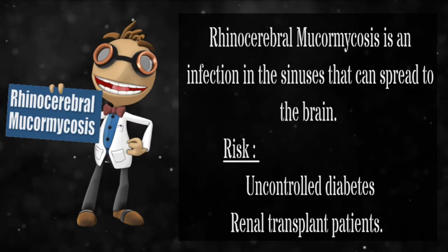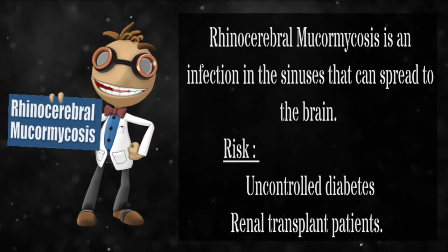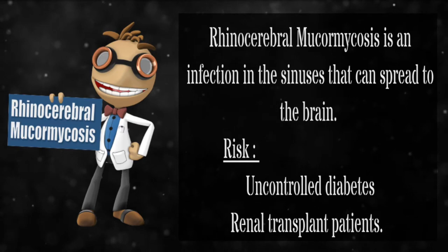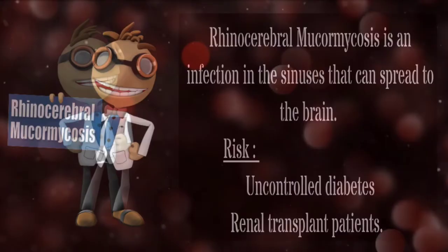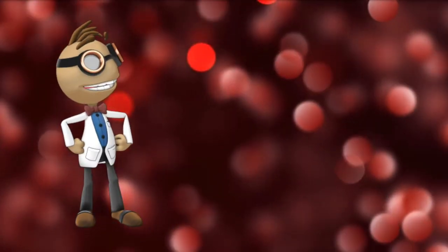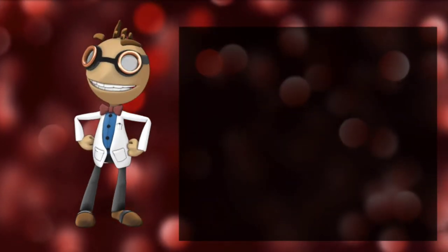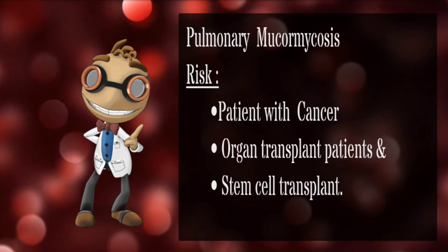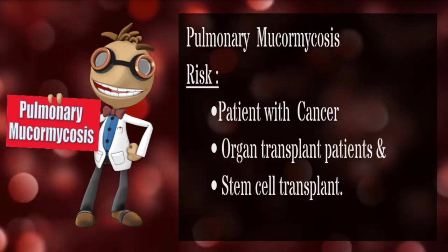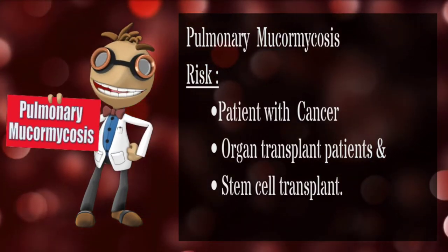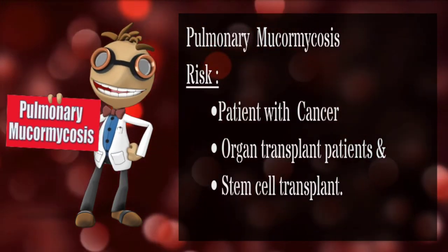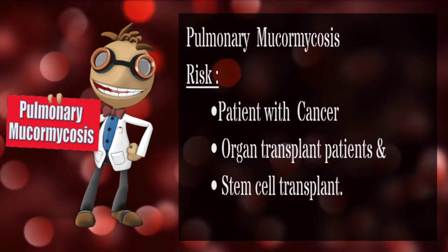Rhinocerebral mucormycosis is an infection in the sinuses that can spread to the brain, commonly seen in uncontrolled diabetes and renal transplant patients. Pulmonary mucormycosis is the most common type and occurs in people with cancer or those who have had an organ transplant or stem cell transplant.